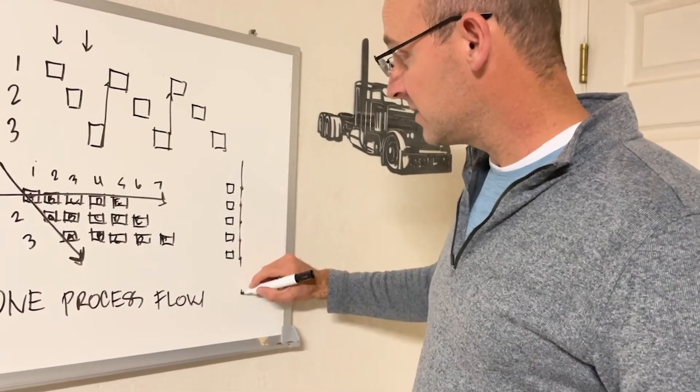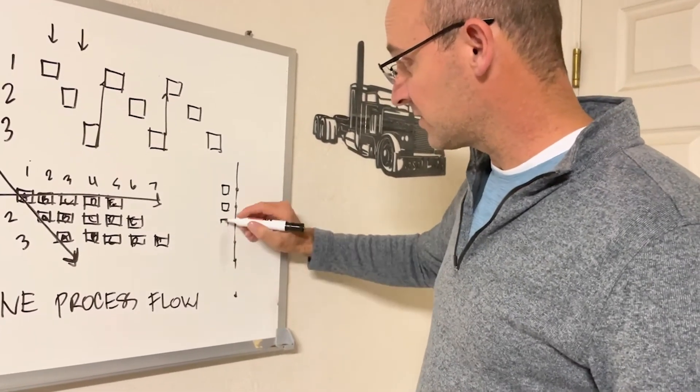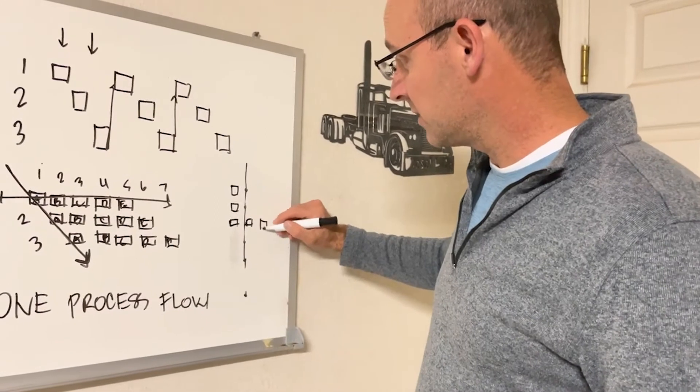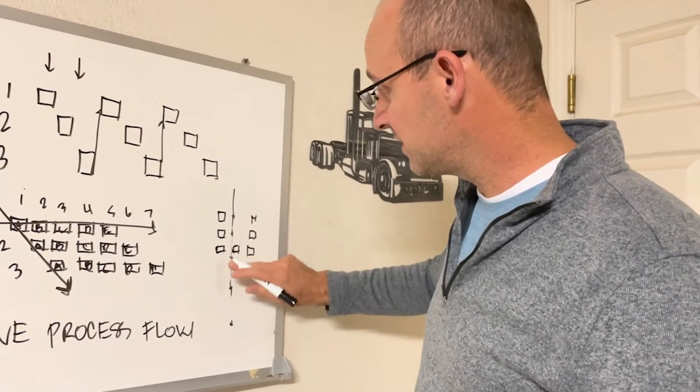Or in manufacturing a lot of times they have the horseshoe little pods and these are like little stations, these are tools, and the piece of material will come from station to station until it's done. So they're working on one piece.